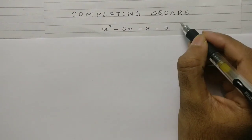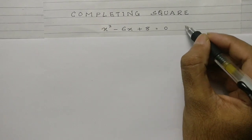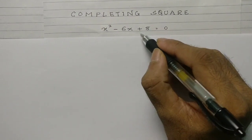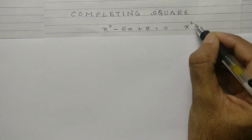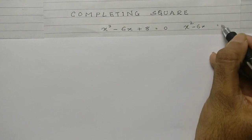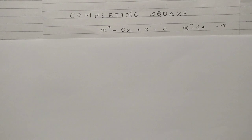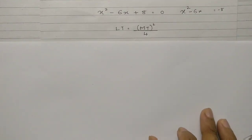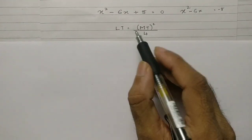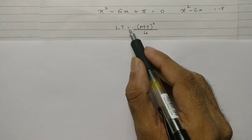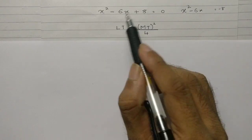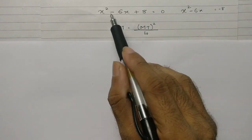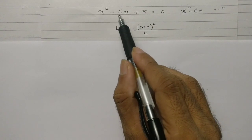What we will do is write this entire equation keeping the plus 8 on the other side, so this becomes x squared minus 6x equals minus 8. Then you have to remember a small formula: last term equals middle term squared upon 4. In this equation, my middle term is minus 6.